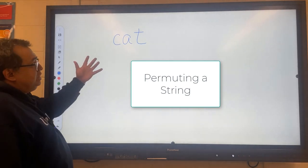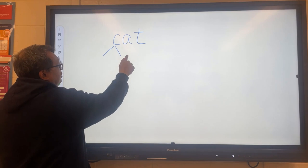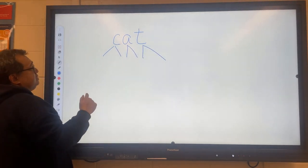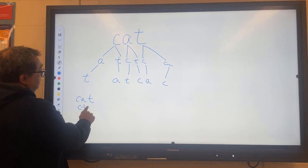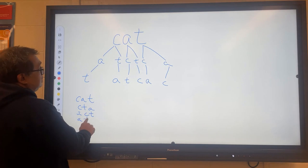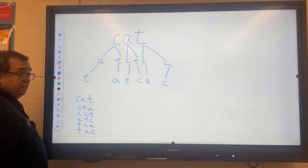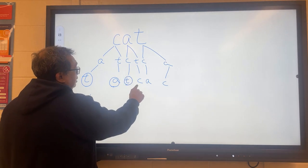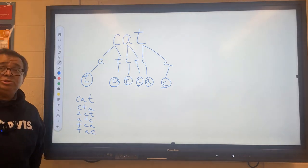We're going to draw the solution tree for permuting these three letters. For the C, we have two other potential outcomes. For the A, we have two outcomes. And for the T, we have two outcomes. So this is going to be CAT, CTA, ACT, ATC, TCA, and TAC. Did I get them all? I think so. So once again, by counting how many leaf nodes there are, we can tell how many solutions are going to be in the final solution here.